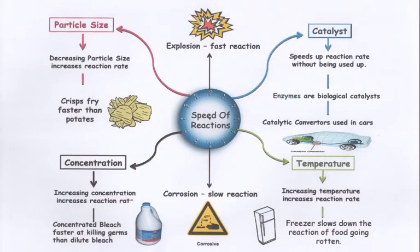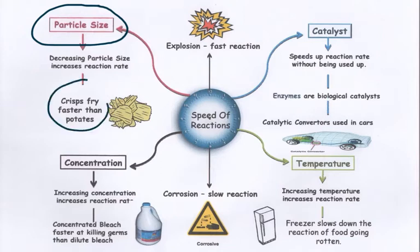We can alter the rate of a reaction in four basic methods. All of them involve what's called collision theory. If we decrease the particle size, we're actually increasing the surface area. This means there is more surface for the reaction to take place on — i.e. crisps will fry faster than potatoes.